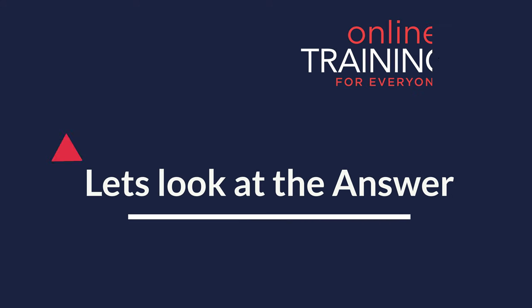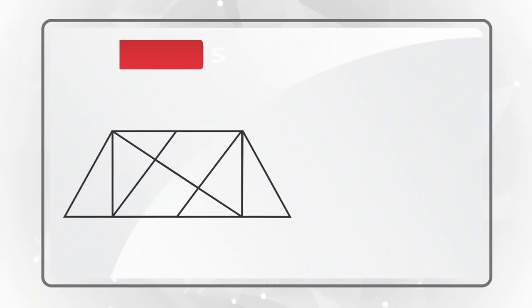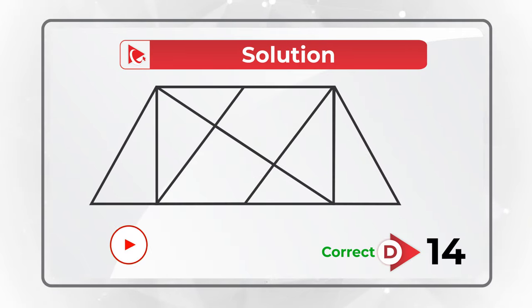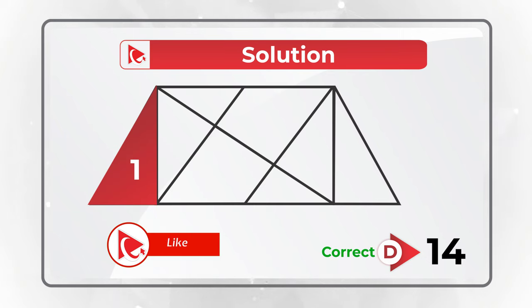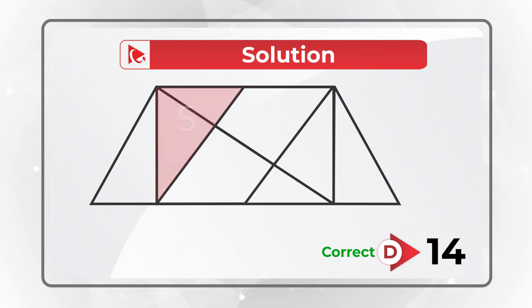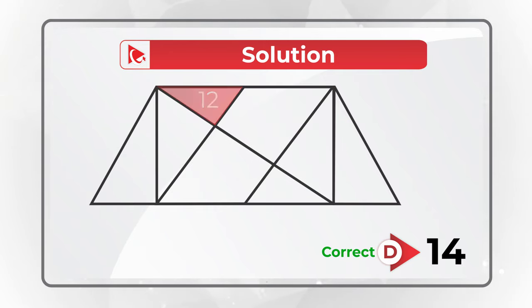Give yourself a little bit of time to see if you can come up with the solution. The correct choice here is choice D, 14 triangles. Let me show them all to you: 1, 2, 3, 4, 5, 6, 7, 8, 9, 10, 11, 12, 13, and 14.